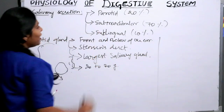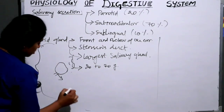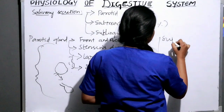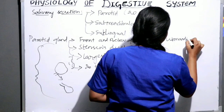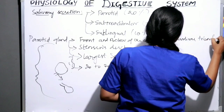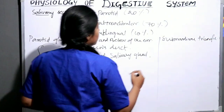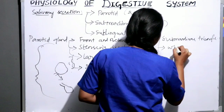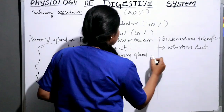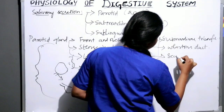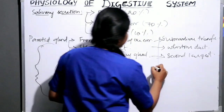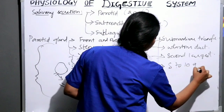Now let's discuss the submandibular gland. It is situated in the submandibular triangle, also called the submaxillary or mandibular triangle. It empties its secretion into the mouth by Wharton's duct. It is the second largest salivary gland and weighs up to 8 to 10 grams.